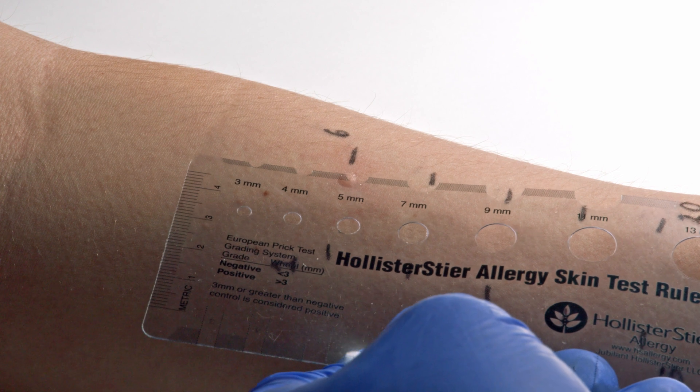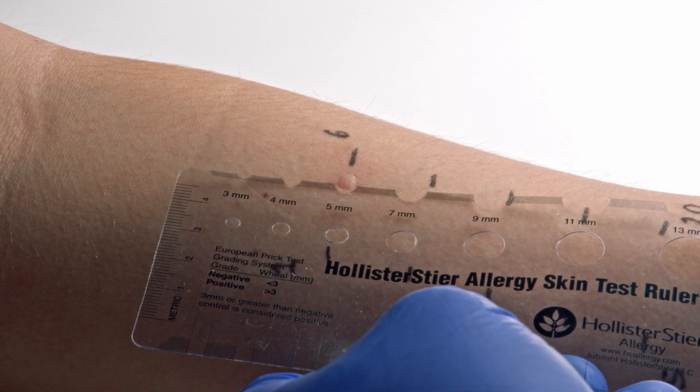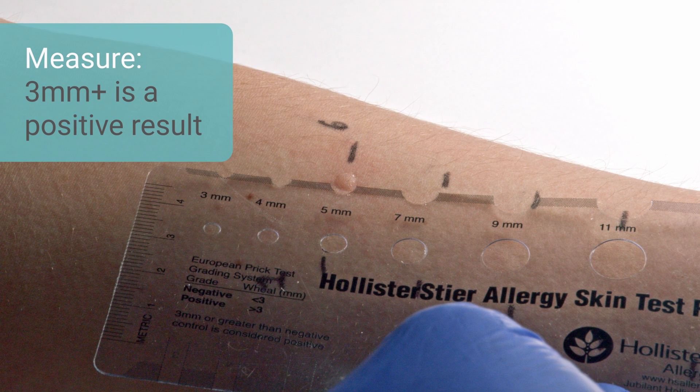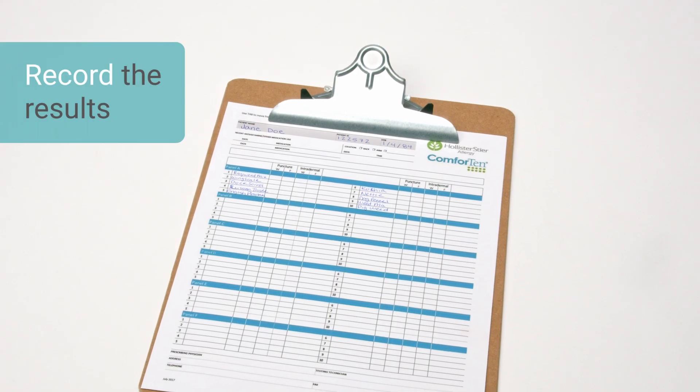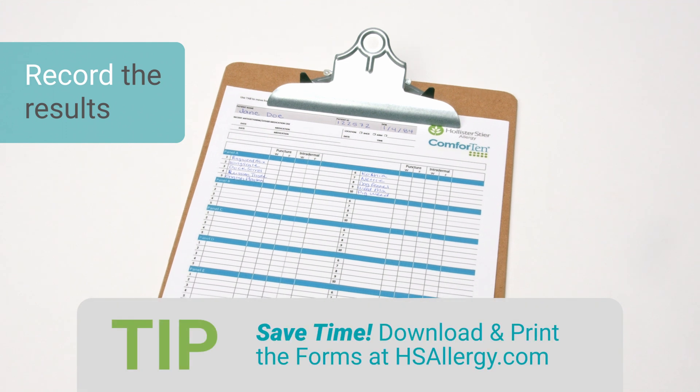Use the Hollister-Steer reaction guide ruler to read the results. A wheal of 3 mm or more indicates a positive reaction to the allergen. Record the results on the Comforten skin test record.